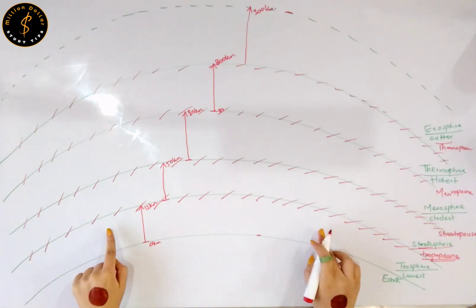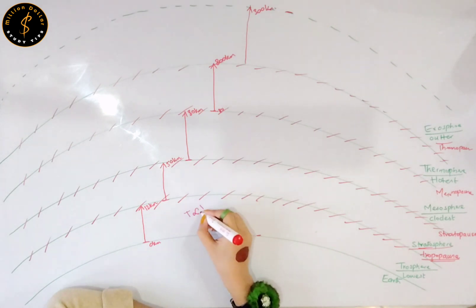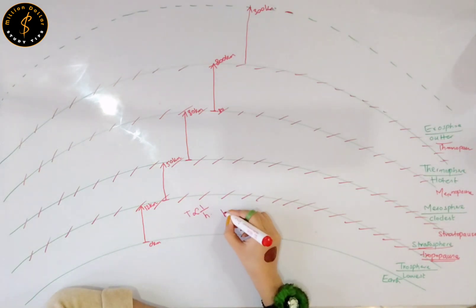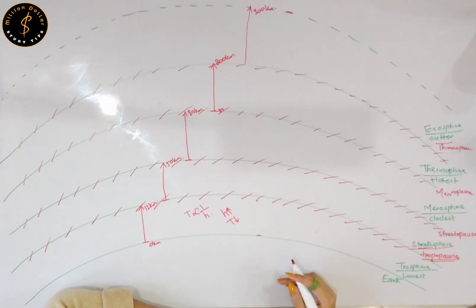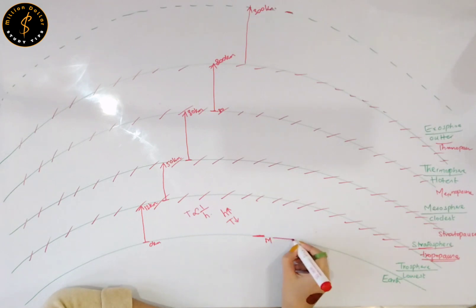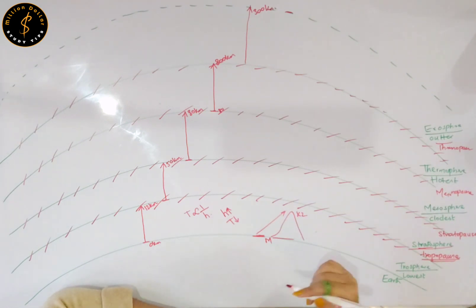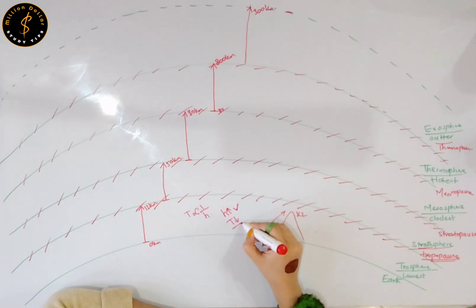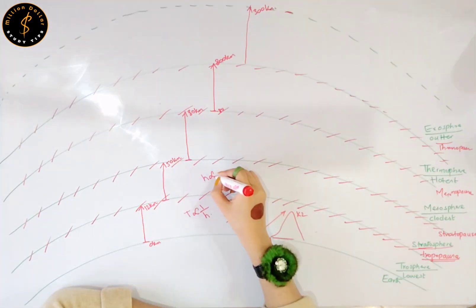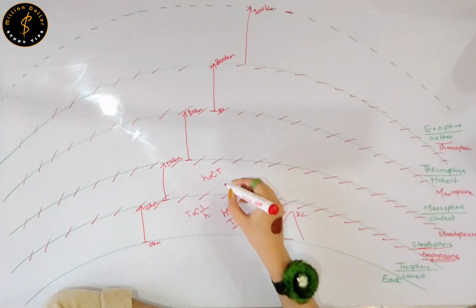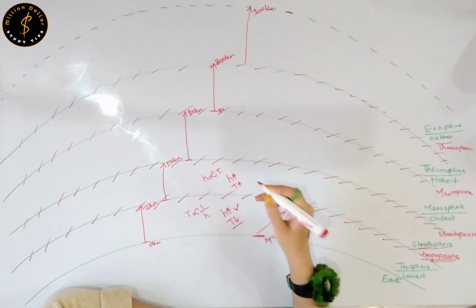In your troposphere, the temperature is inversely proportional to the height. It means that with the increase in height, the temperature is decreasing in your troposphere. In your stratosphere, your height is directly proportional to your temperature — the more you go higher, the more the temperature of this layer will increase.